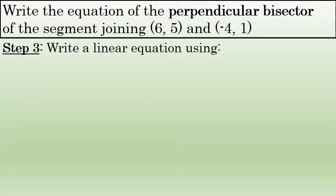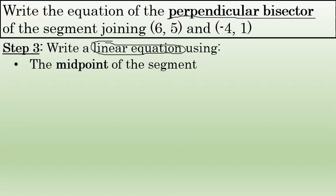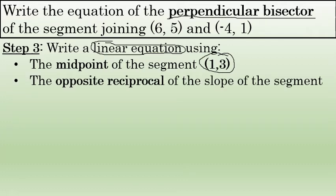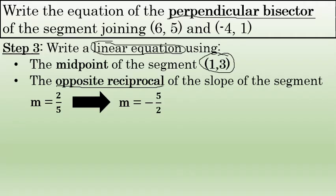With steps one and two complete, you now have enough information to write the equation of the perpendicular bisector. The perpendicular bisector is a straight line, so this will be a linear equation. It can be written using, from step one, the midpoint of the segment — which is on the perpendicular bisector — that's 1, 3. And from step two, not the slope of the segment, but the opposite reciprocal of that slope. Perpendicular lines have slopes that are opposite reciprocals of one another, so if the slope of the segment is 2 fifths, the slope of the perpendicular bisector is negative 5 over 2. We'll write the equation using the point 1, 3 and the slope negative 5 halves.